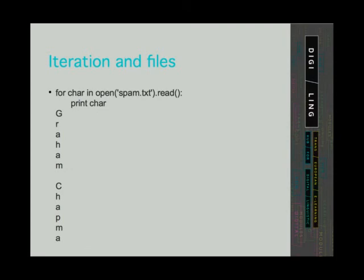Let's see now how we can iterate through the contents of the file character by character. We can do that by calling the method read on the file. The example on the slide shows only the first part of what the program returns — it returns each character from the spam.txt file in a separate line.